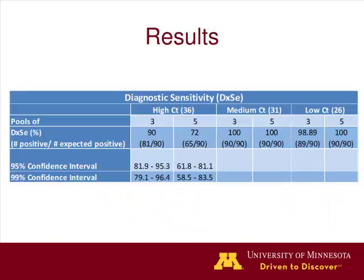The results for phase one showed that the greatest risk for missing a positive in a pool was in the high CT value group. We therefore focused on this group for the most conservative estimates used in developing our sampling tables. We calculated the mean diagnostic sensitivity and 95% and 99% confidence intervals for pools of three and five in the high CT group, which gave us the diagnostic sensitivity values to plug into the model.